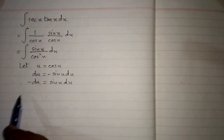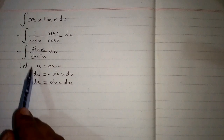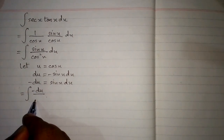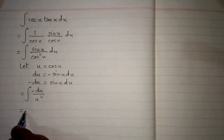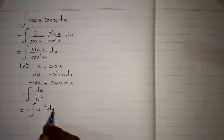Now we will put minus du in place of sin x dx and u in place of cos x. So we have the integral of minus du upon u squared, which can be written as minus integral of u to the power minus 2 du.